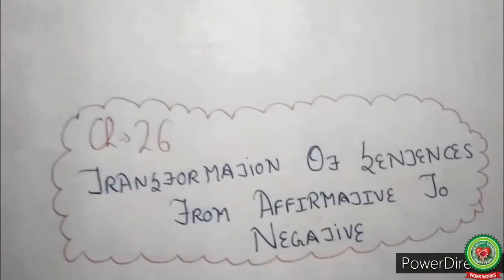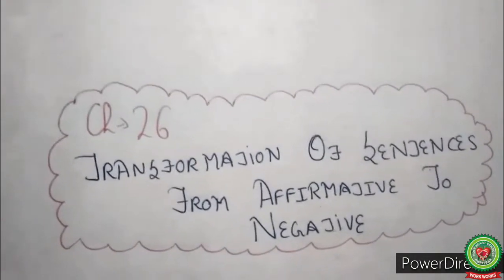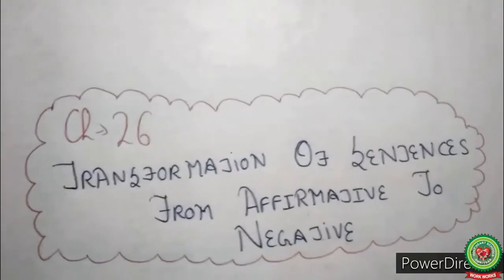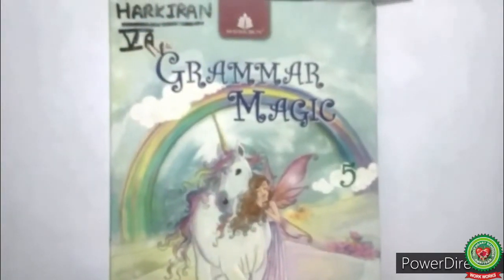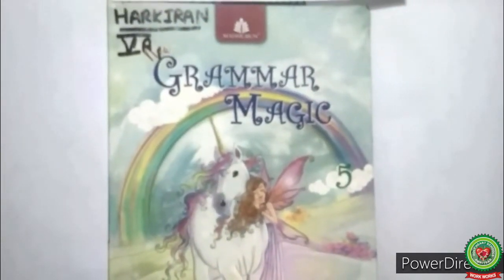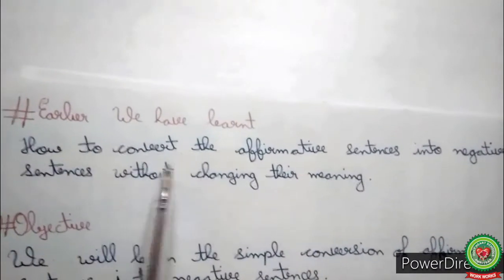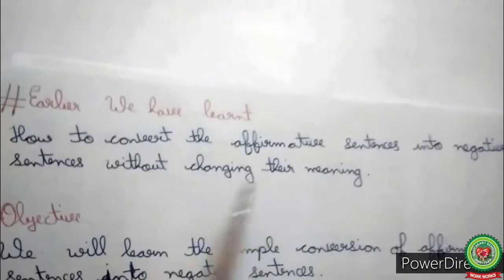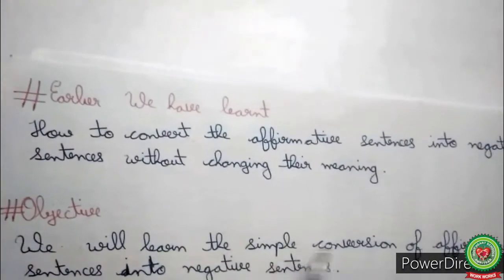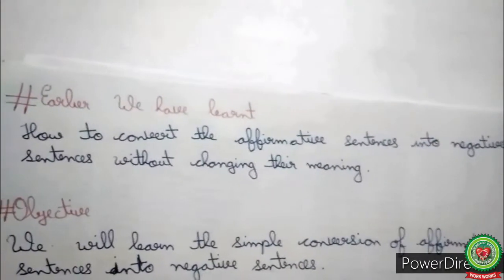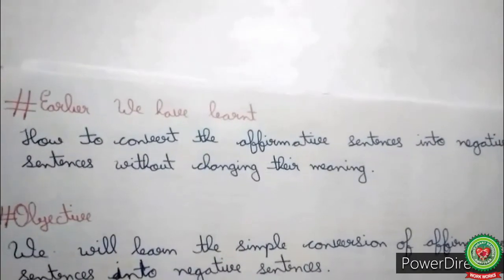Good morning children. Today we are going to continue with our chapter on transformation of sentences from affirmative to negative. Open your book, New Grammar Magic, at chapter number 26, page number 97. Earlier we have learned how to convert affirmative sentences into negative sentences without changing their meaning, but today we will learn the simple conversion of affirmative sentences into negative sentences.